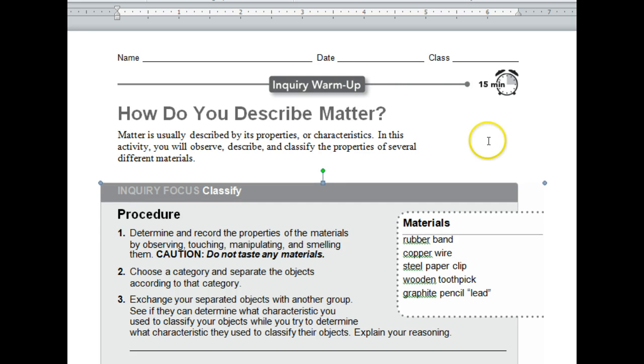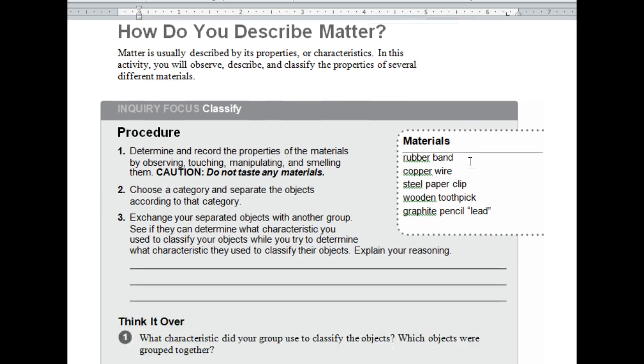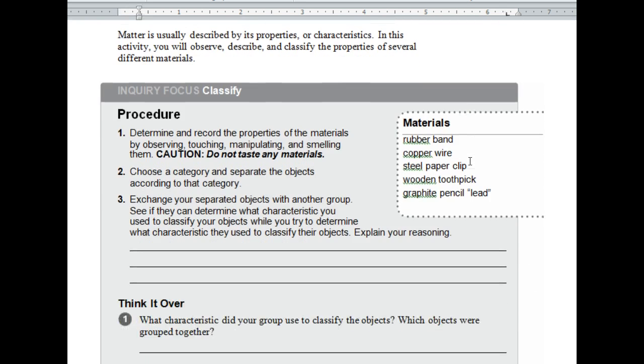So you're going to be given, let me get down here, each lab station will be given a rubber band, copper wire, a steel paper clip, wooden toothpick, and instead of the graphite lead pencil, you're going to be getting a piece of chalk. They're basically the same kind of thing.